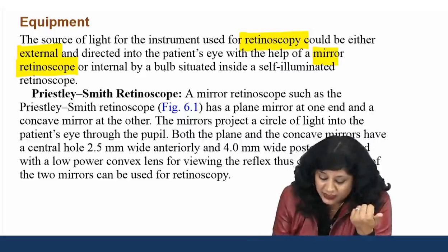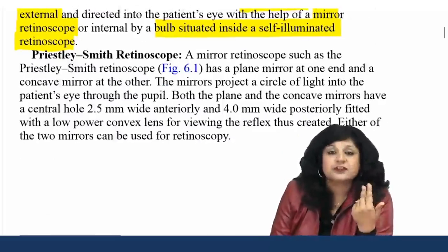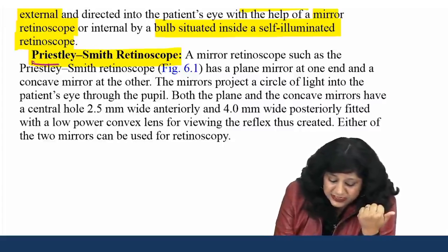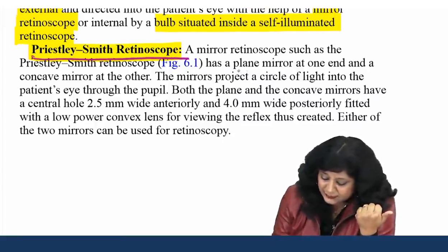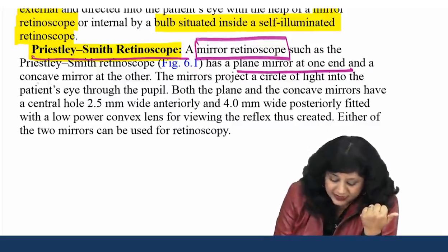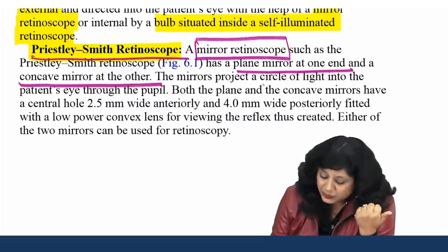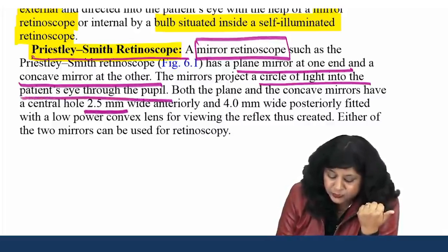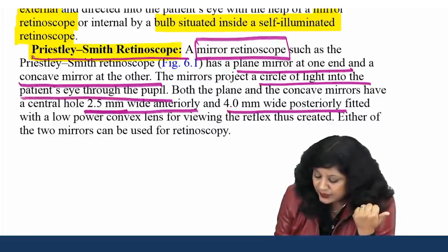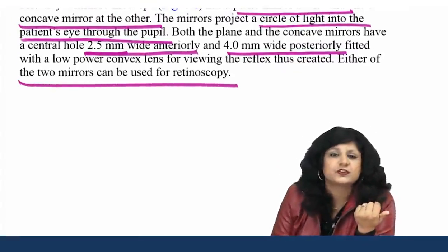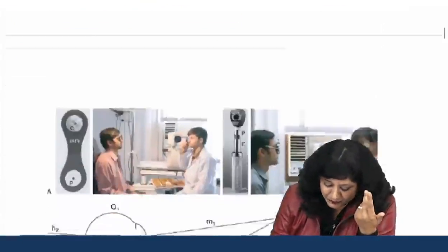The light seen in the pupil is the blurred image of the illuminated area of the fundus as seen by the observer when accommodating for the observed pupil. It is bordered by a shadow representing the edge of that illuminated area. The method therefore consists of neutralizing this movement until the light fully illuminates the pupil and you are not seeing any shadow, by placing lenses in front of the eye.